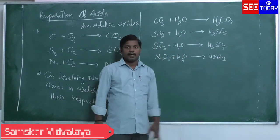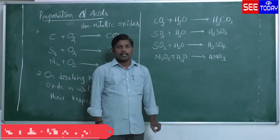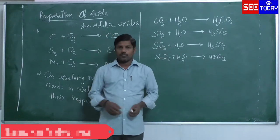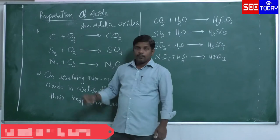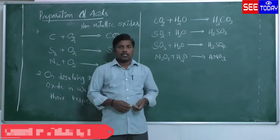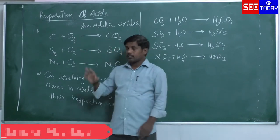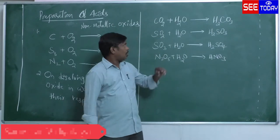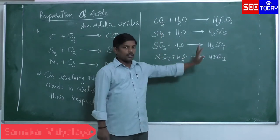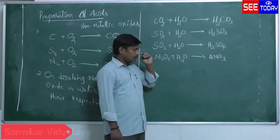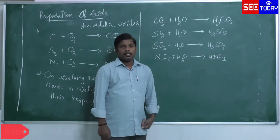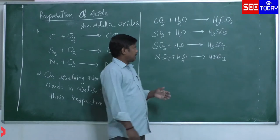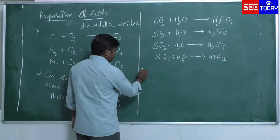So the first method is: on making non-metals react with oxygen, they form the respective non-metallic oxides. The second method is: on dissolving non-metallic oxides in water, they form their respective acids. Now let's look at the third method.